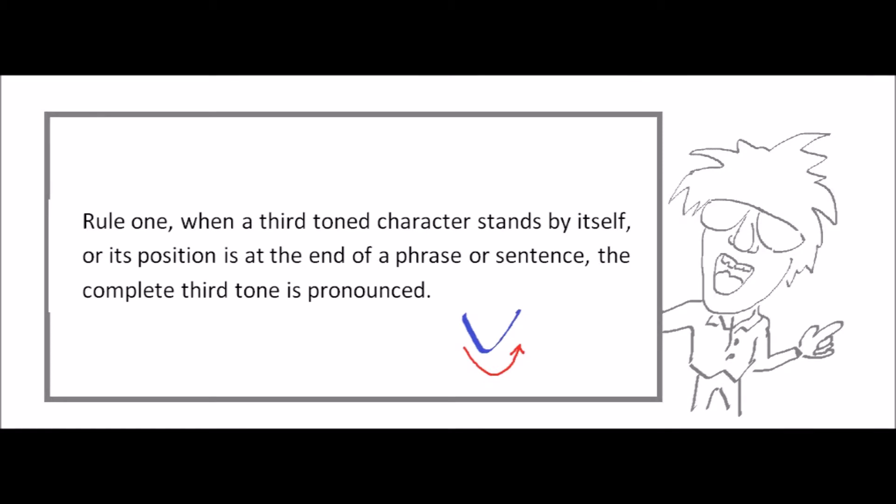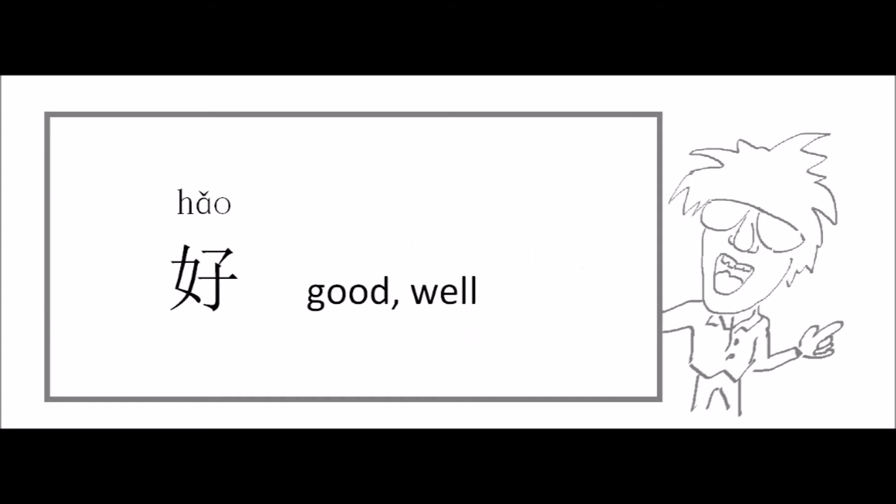Rule 1: when the third-toned character stands by itself or its position is at the end of phrase or sentence, the complete third tone is pronounced. For example, this character 好 stands by itself, so the complete third tone is pronounced. 好, 好. Another example, 你, 你.